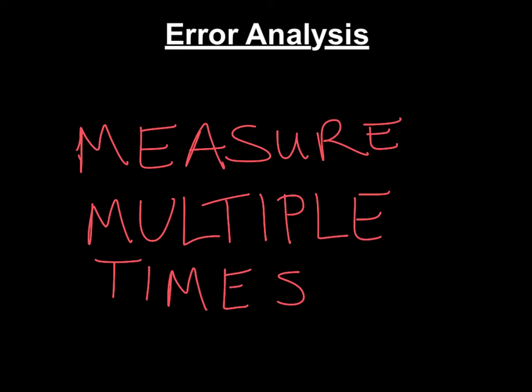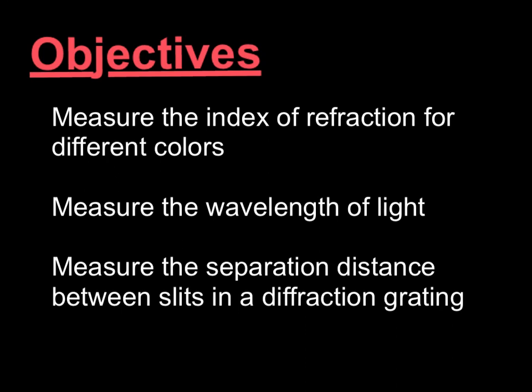Error analysis. Real simple. You're going to measure multiple times. And then you wrap up. Just to go through the objectives. You're going to measure the index of refraction for all the different colors using the prism. This is for the prism. Then you're going to measure wavelength of light. These are for the grating.